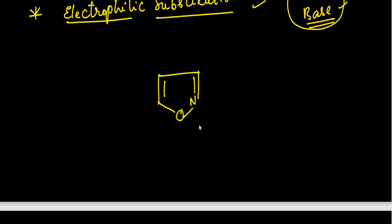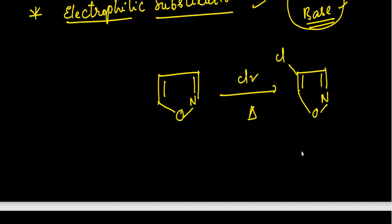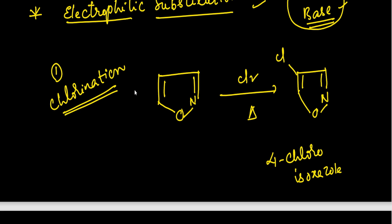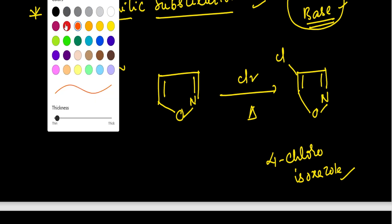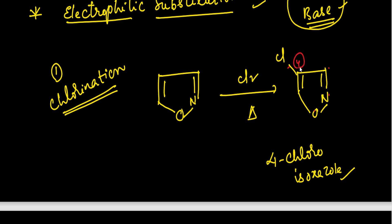The electrophilic substitution of isoxazole always takes place at the fourth position. For example, when isoxazole reacts with chlorine, chlorination takes place. Counting the positions — one, two, three, four — the chlorination occurs at the fourth position and gives 4-chloroisoxazole.